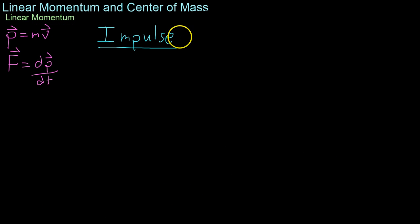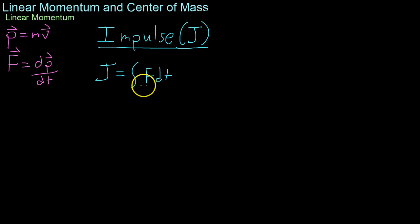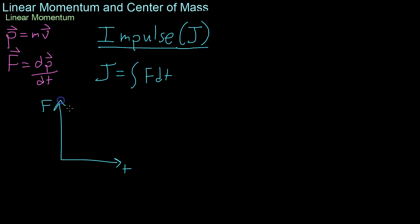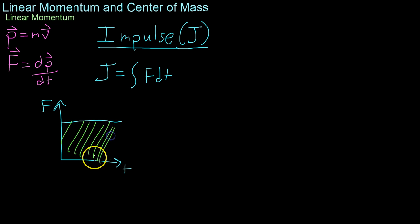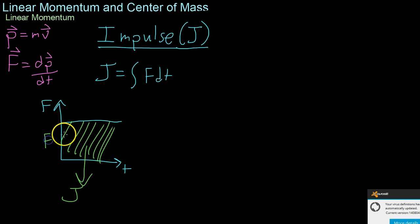Moving on, we're going to be further relating momentum and force through the concept of impulse. Impulse, which is represented by the letter J, is defined as the integral of force with respect to time. If you had a graph of force versus time, the area below it — which is what the integral gives — is the total impulse of the system. For constant forces, all you have to do is multiply the force times the delta time, giving you the area of that rectangle. So J for constant forces is just force times delta time.